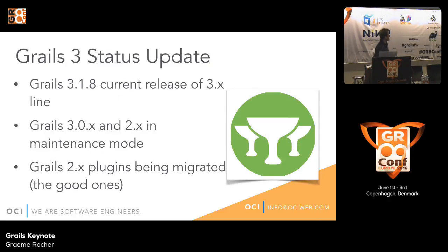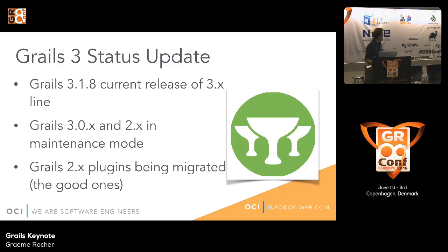In terms of the status update, Grails 3 is currently at 3.1.8, which is the current stable release. 3.0.x and 2.x are in maintenance mode, and we continue to evolve the 3.1 branch. We're still making progress in migrating the Grails 2.x plugins — the majority of the important ones have migrated. If you're still on Grails 2, now is a great time to consider jumping to Grails 3.